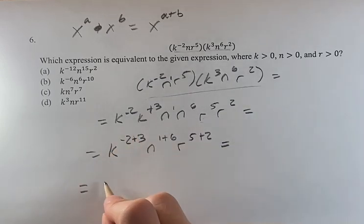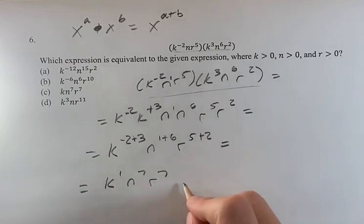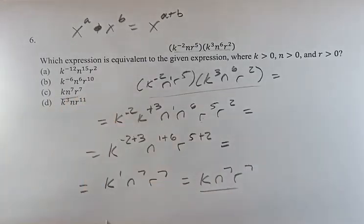Just doing some simple addition. This is k to the 1, this is n to the 7, this is r to the 7. k to the 1 is just k, which leaves us with this form, which lines up with answer C.